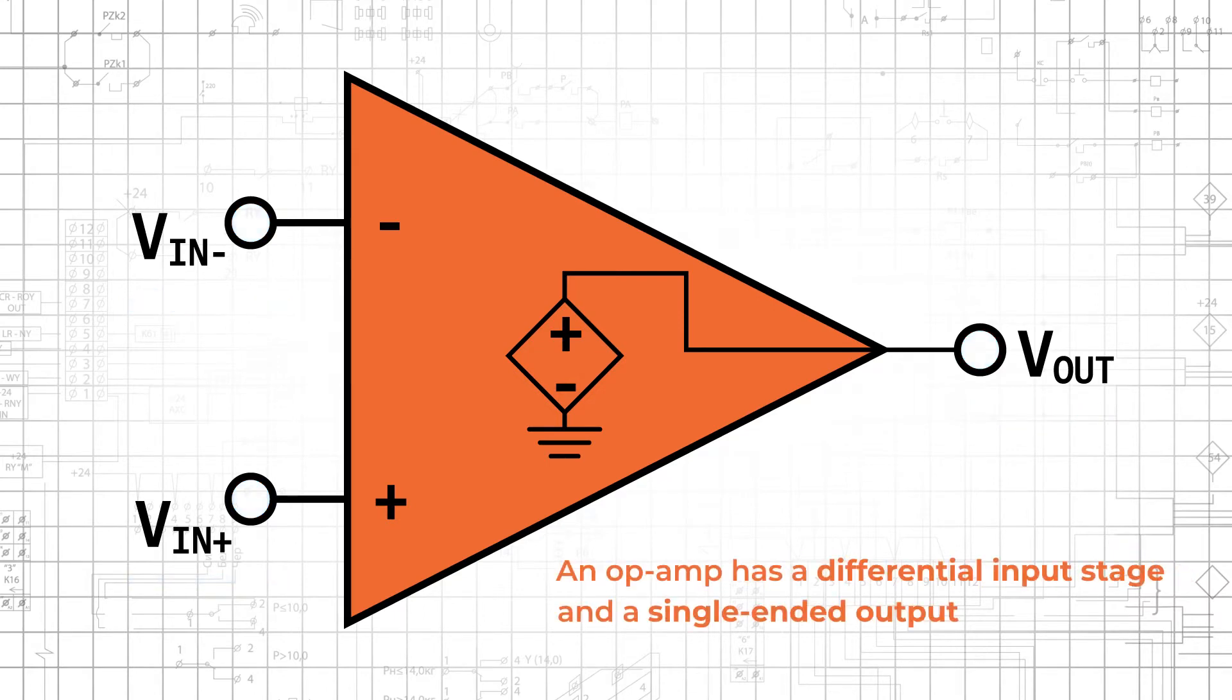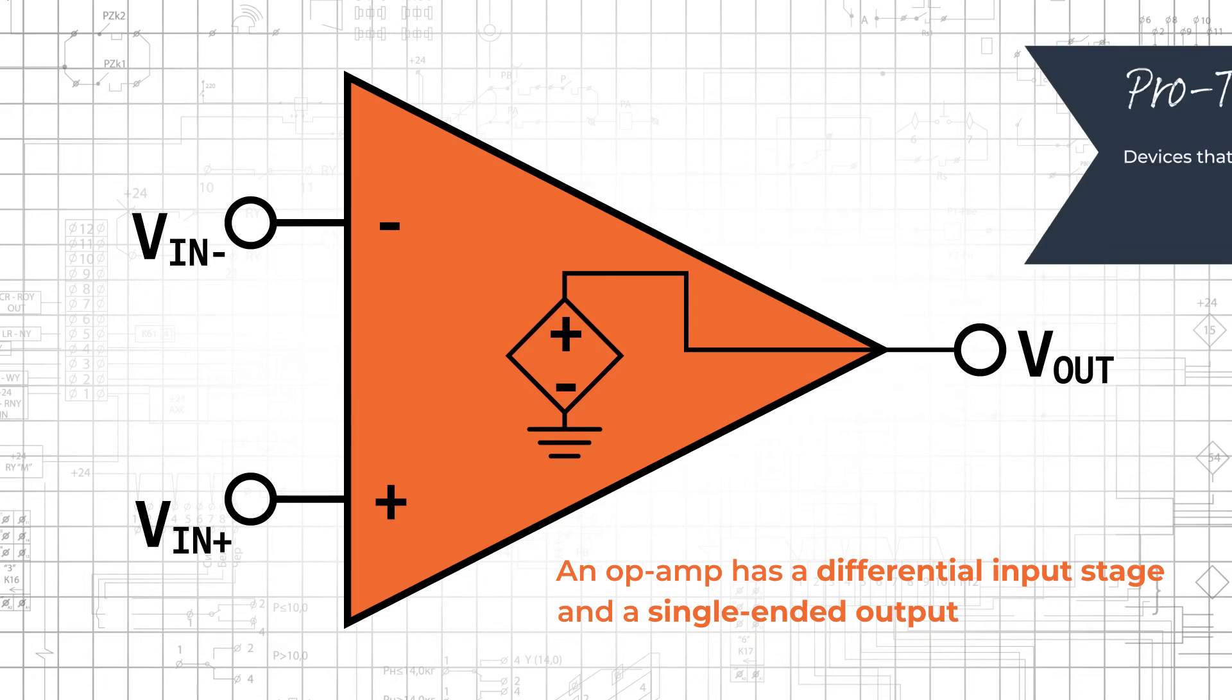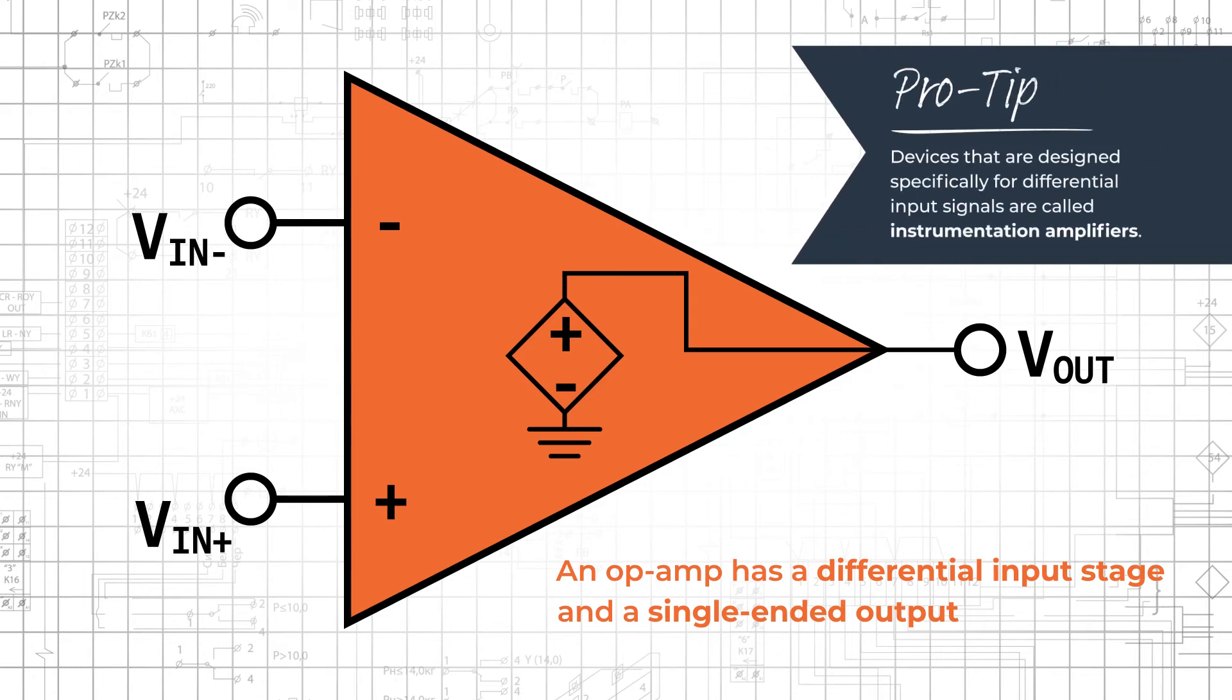An op-amp has a differential input stage and a single-ended output, and can be considered a differential to single-ended converter. However, real-life op-amp applications are associated much more closely with single-ended input signals. Devices that are designed specifically for differential input signals are called instrumentation amplifiers.